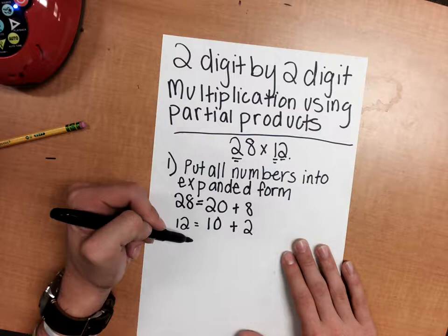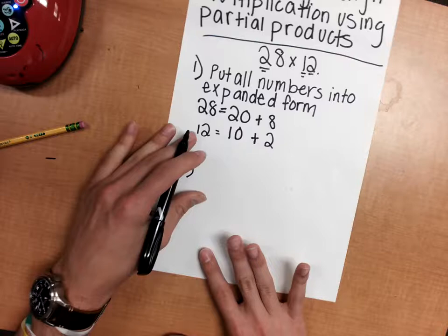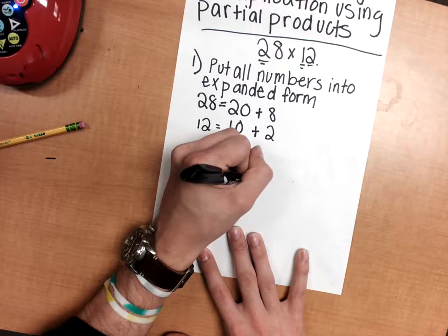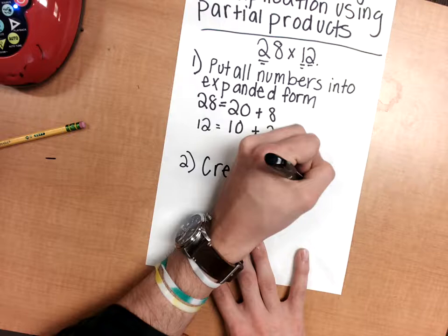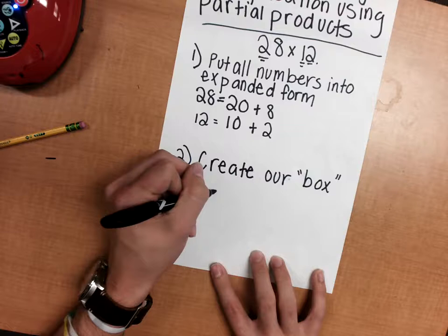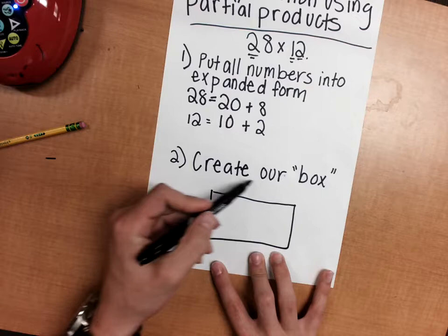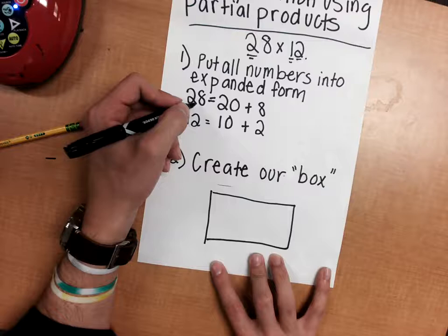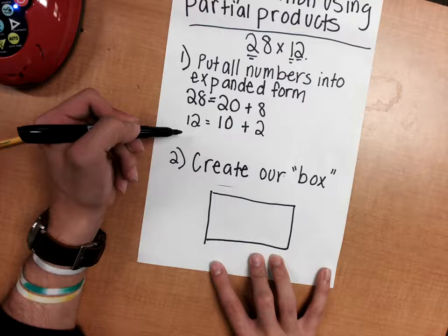Our second step is to create what I tell my students is our box. When we create a box, we're drawing a rectangle. We're putting one number on top—for this example, I'll put 28 on top. And we're going to put a number on the left side of our rectangle, I'll put 12.